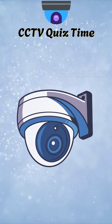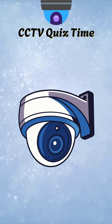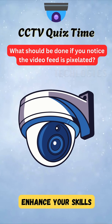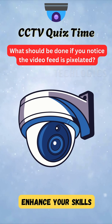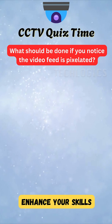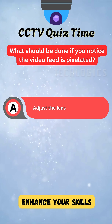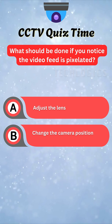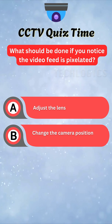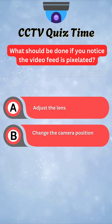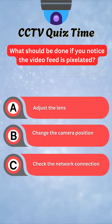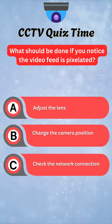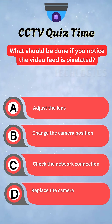Ready to challenge your understanding of technology? Here's a question for you. What should be done if you notice the IP camera video feed is pixelated? A. Adjust the lens. B. Change the camera position. C. Check the network connection. D. Replace the camera.